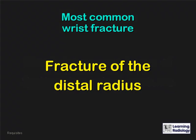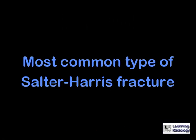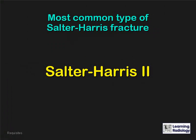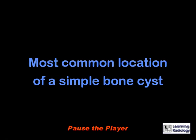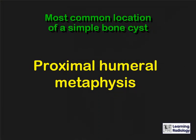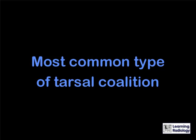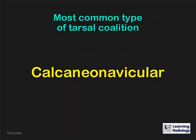What is the most common type of Salter-Harris fracture? A Salter-Harris type 2. What is the most common location of a simple or unicameral bone cyst? The proximal humeral metaphysis. What is the most common type of tarsal coalition? A calcaneo-navicular coalition.